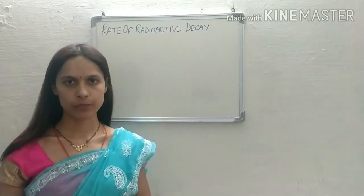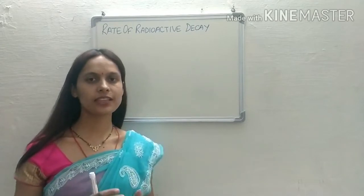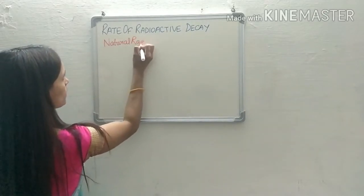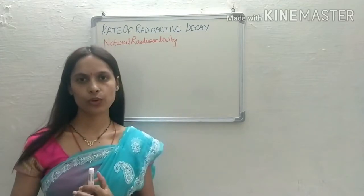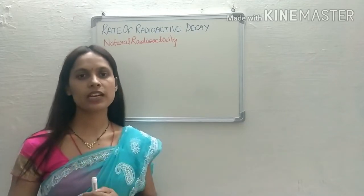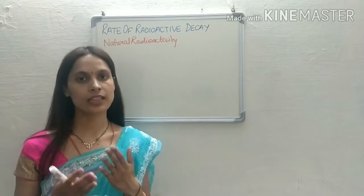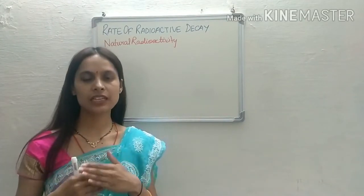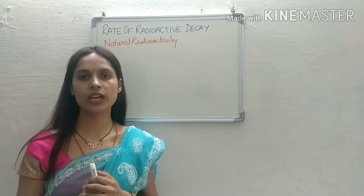The next topic is rate of radioactive decay. Natural radioactivity: in our nature, certain elements like uranium and thorium emit alpha, beta, and gamma radiations spontaneously — by their own. This phenomenon is known as natural radioactivity. When an element spontaneously emits radiation, it is termed a natural radioactive element.